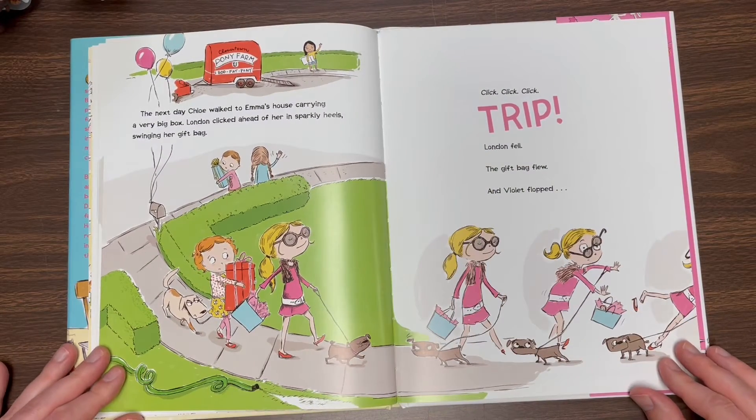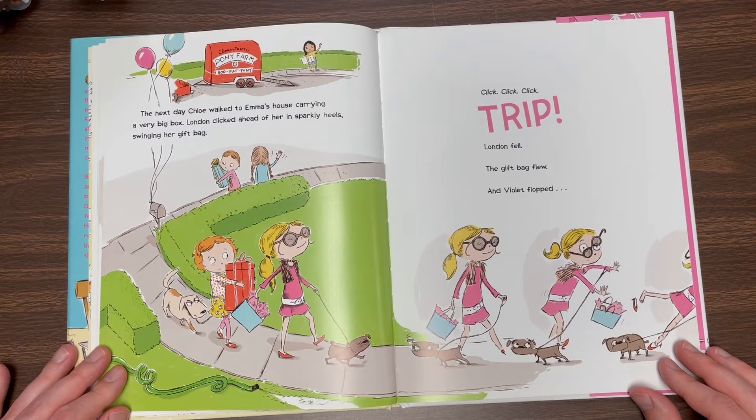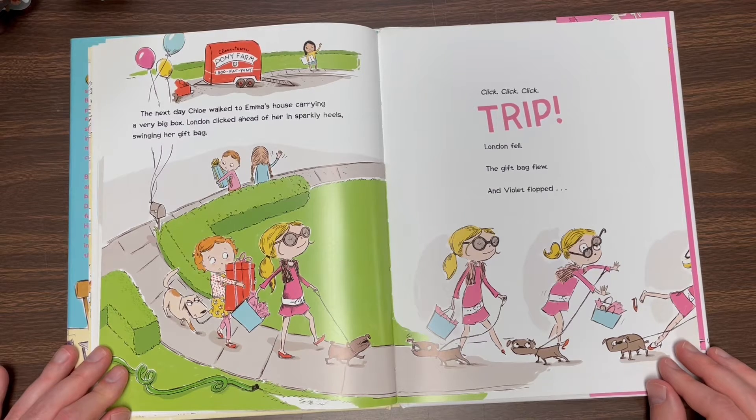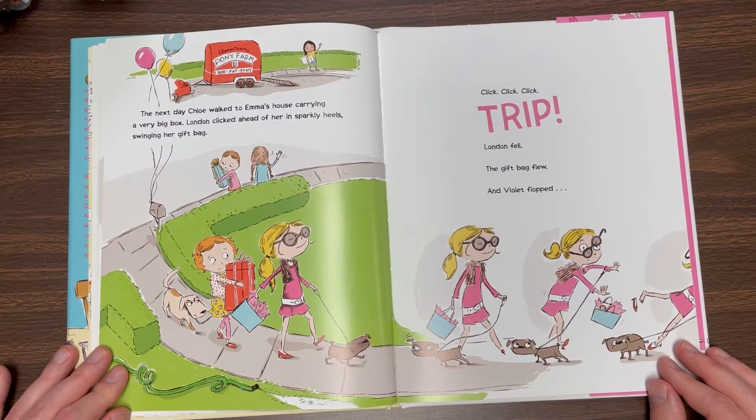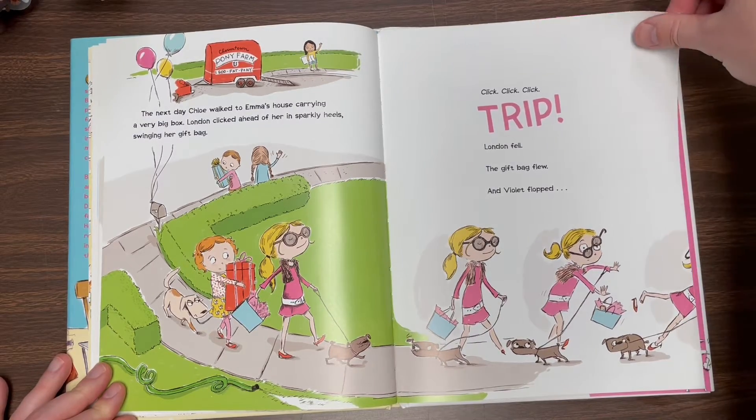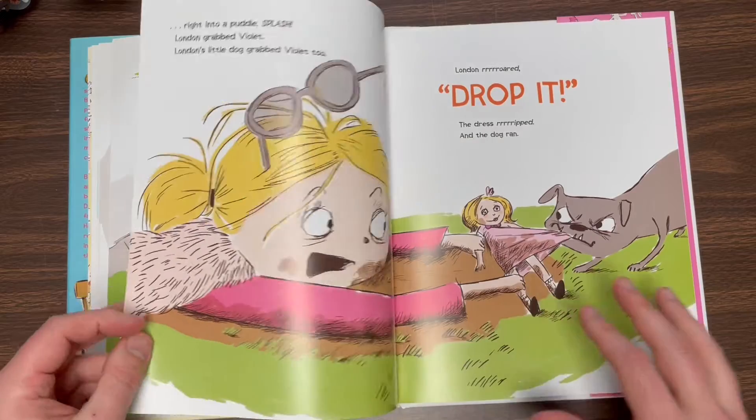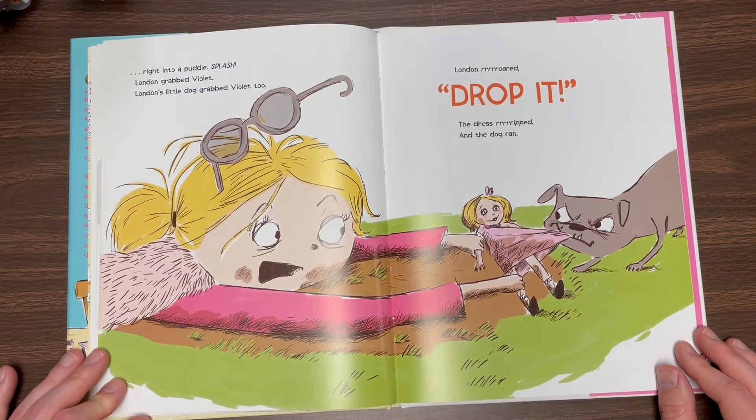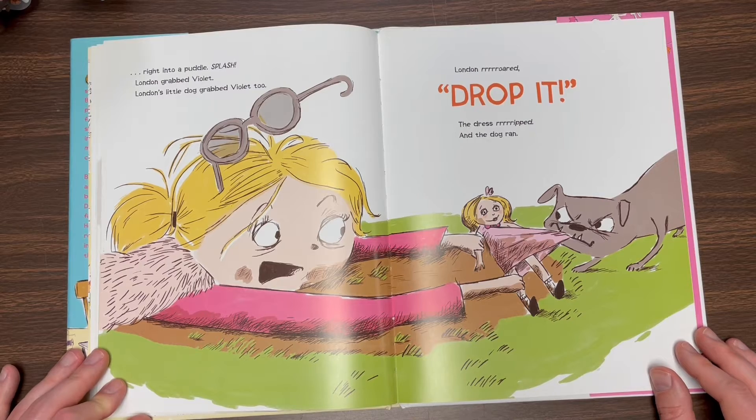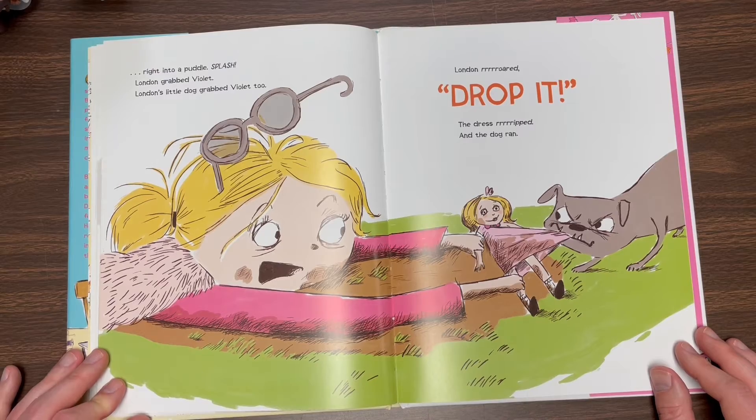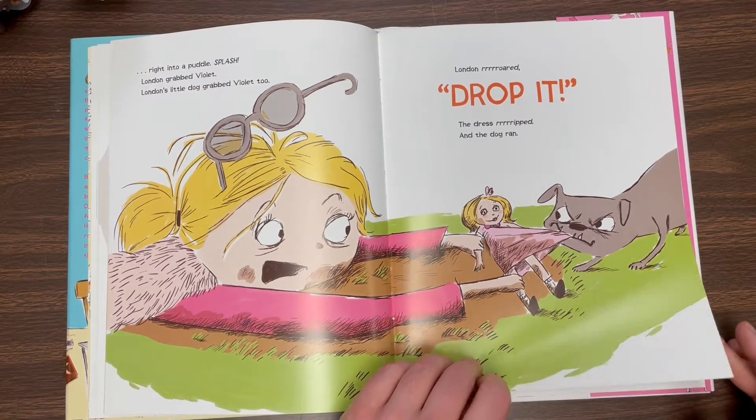The next day, Chloe walked to Emma's house carrying a very big box. London clicked ahead of her in sparkly heels, swinging her gift bag. Click, click, click. Trip. Trip. London fell. The gift bag flew. And Violet flopped. Right into a puddle. Splash. London grabbed Violet. London's little dog grabbed Violet, too. London roared. Drop it. The dress ripped and the dog ran.